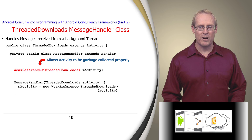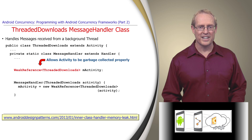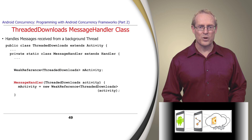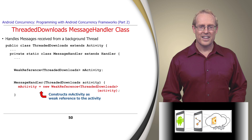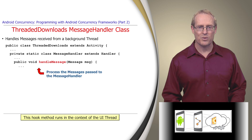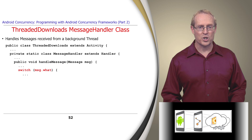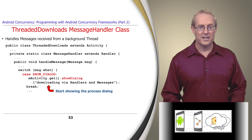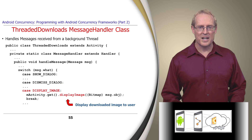MessageHandler also contains a weak reference, which enables it to be garbage collected properly. Its constructor initializes its weak reference to store a reference to the enclosing activity. The HandleMessageHook method processes the specified messages passed to the message handler associated with the user interface thread. These messages instruct the handler to start showing the progress dialog, dismiss it, or display the designated image via an image view object.